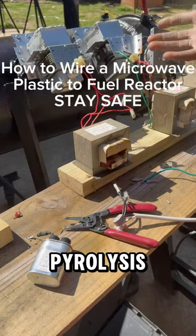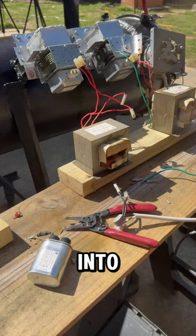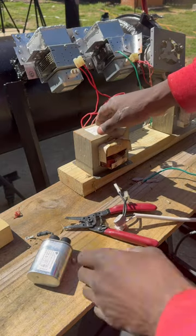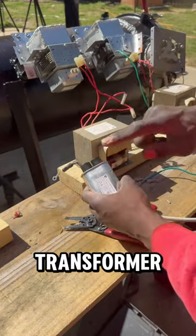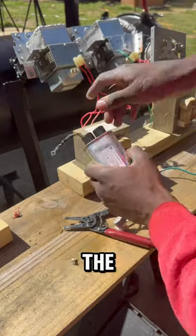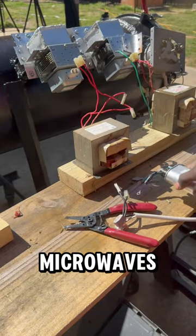So this is a microwave pyrolysis reactor that converts plastic waste into fuel using microwaves. These are the microwave components from microwave ovens: transformer, capacitor, and magnetron - the producer of the actual microwaves.